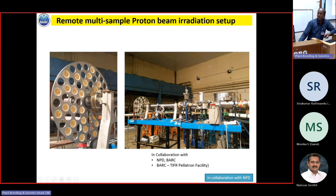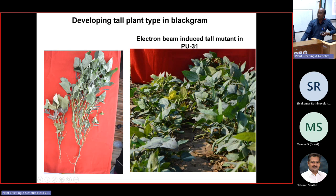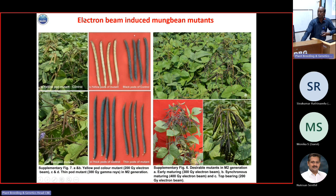This is a kind of setup we have in our labs where samples are kept in a small cavity and used in ion beam radiation — especially the proton beam radiation — to treat the seeds. Then the general procedure is the same: M1, M2, what we are doing regularly. These are some of the mutants we have developed through electron beam in black gram. You can see the dwarf type which has been induced through the electron beam, and similarly the plant type change on the other side. Many times radiation induces dwarfness, but in this case the radiation has induced tallness also. This is PU-31 black gram where it is very dwarf type, and through electron beam we have induced the tall plant type also. In field condition you can see how the tall mutants are grown adjacent to the parent type.